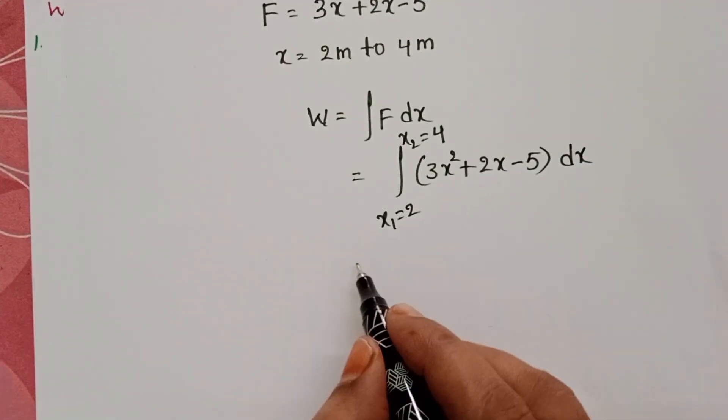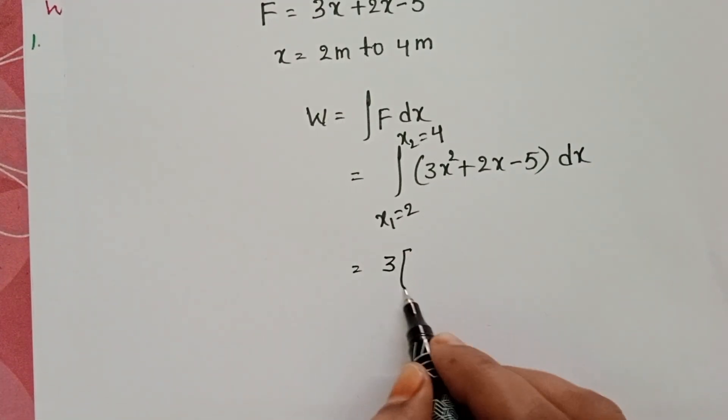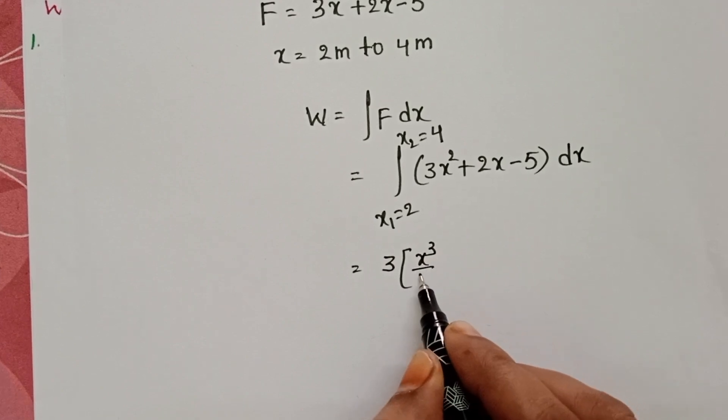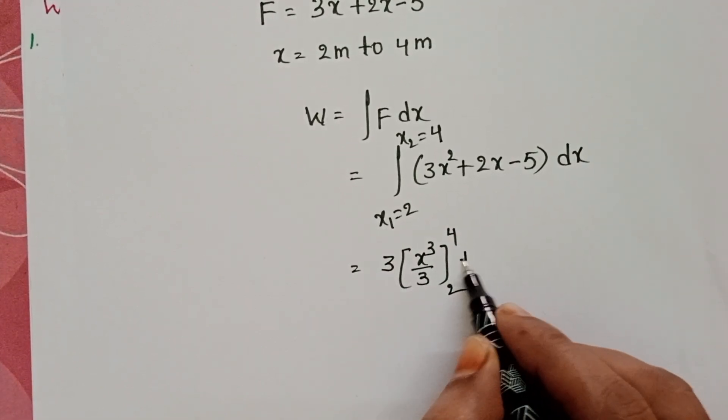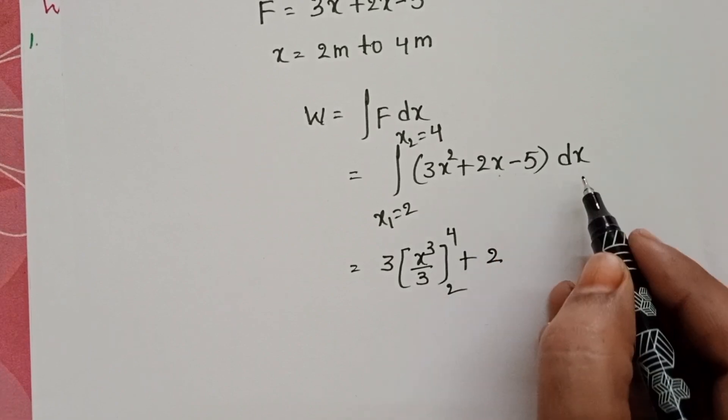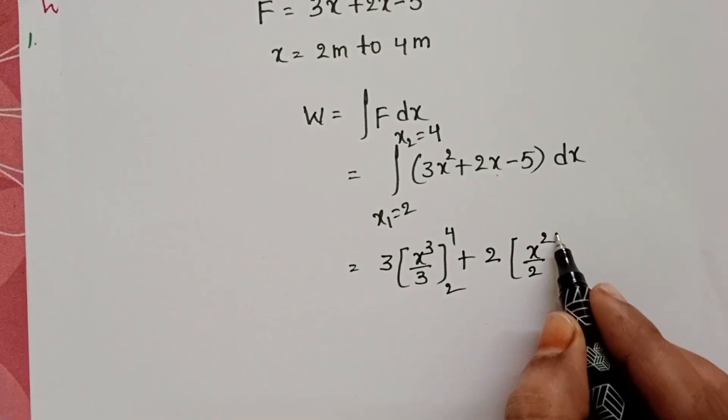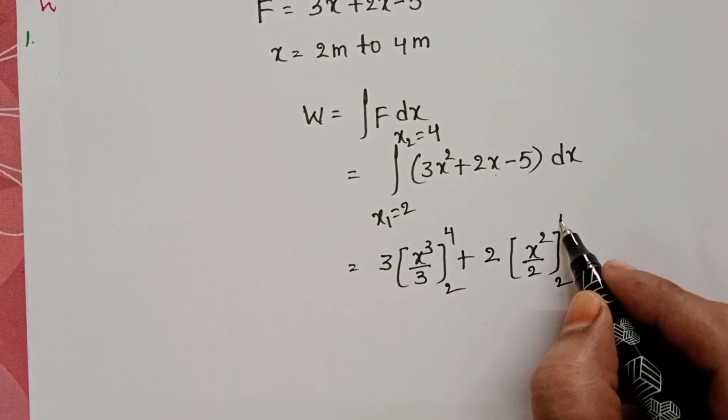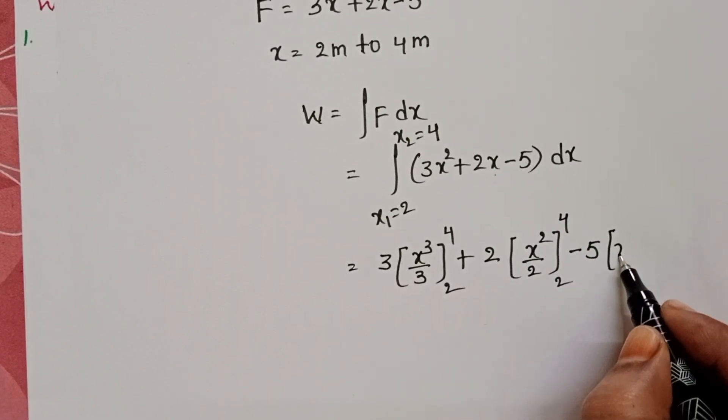Do the integration. 3 integral x² dx is equals to x³/3, limits from 2 to 4, plus 2 into integral x dx is equals to x²/2, minus 5 into integral dx is equals to x.